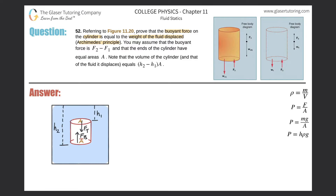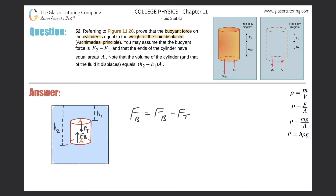So we'll call that the force at the bottom. The sum of these gives us the buoyant force. So we have the buoyant force equal to the force on the bottom of the object minus the force on the top of the object. Now, the cylinder has a certain area and is at a certain height, so we can use F = PA — force equals pressure times area.